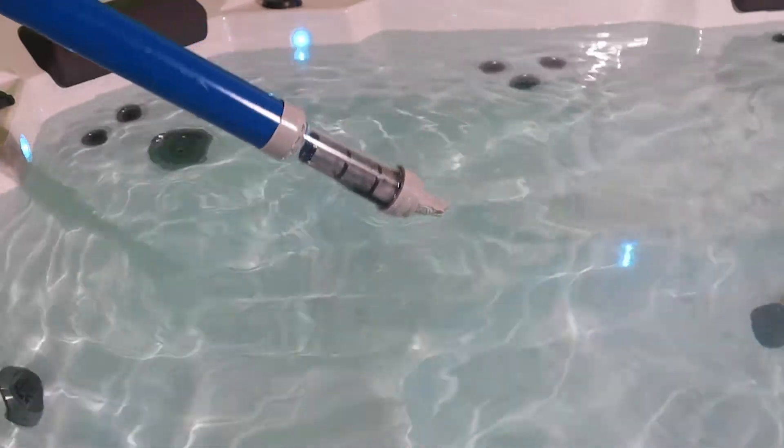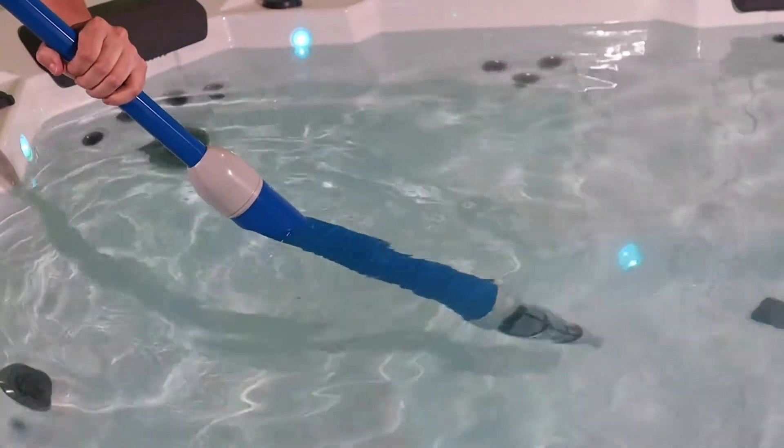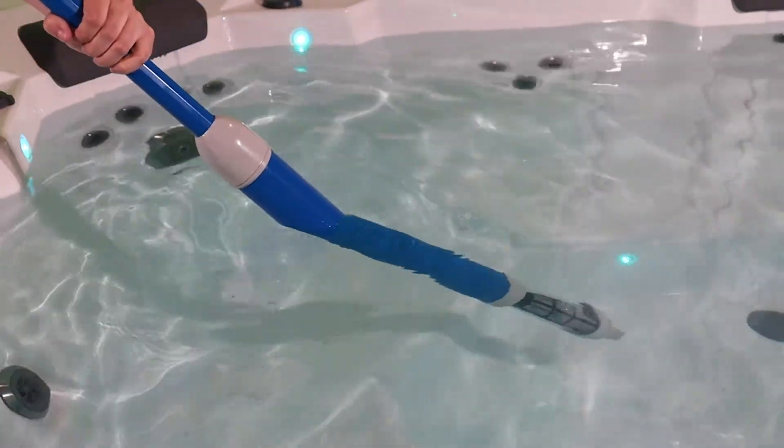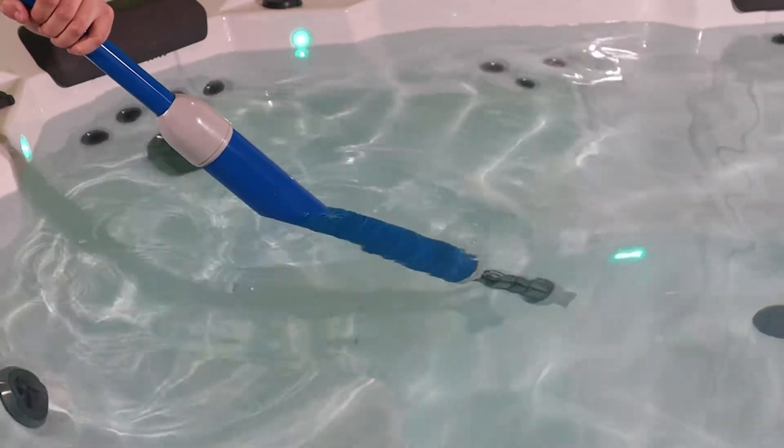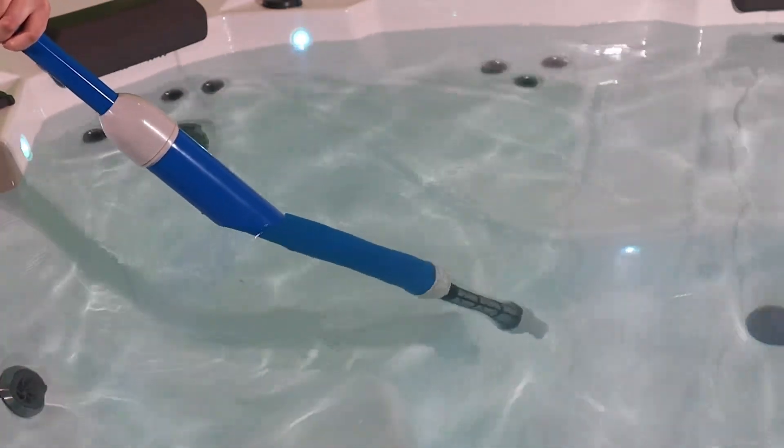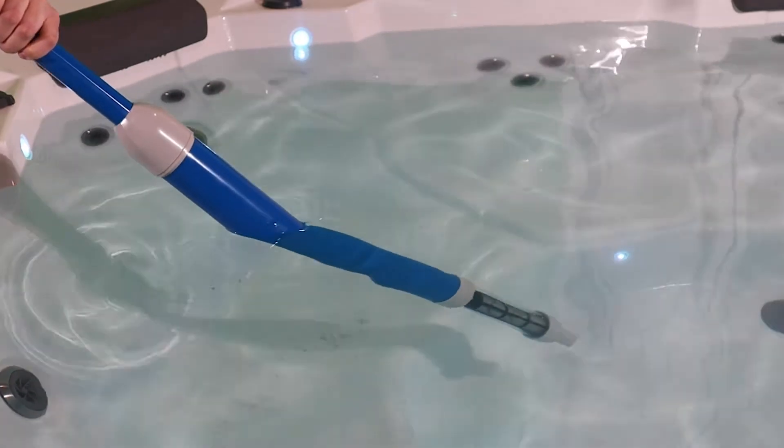To use the vac, it's pretty simple. Pop it into the water and push up and down just in the hot tub itself, nowhere near the grit at first. That primes the vac. So now it's full of water.